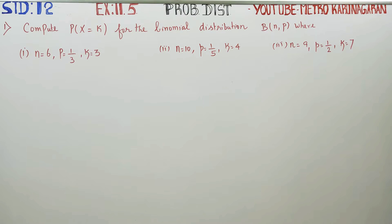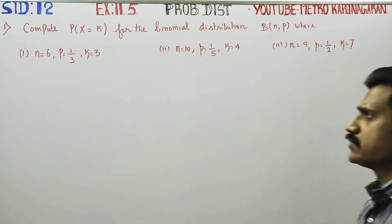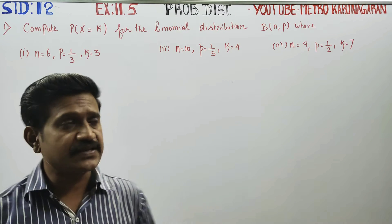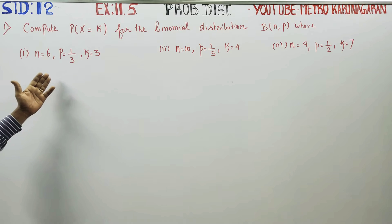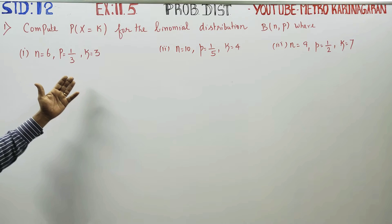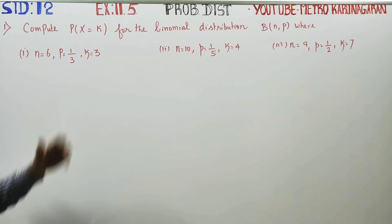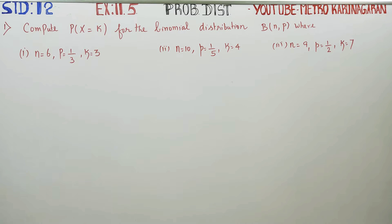Dear 12th standard students, in probability distribution, this is problem number 11.5. Compute the probability of x equal to k for the binomial distribution B(n, p), where n is equal to 6, p is equal to 1/3, and k is equal to 3.